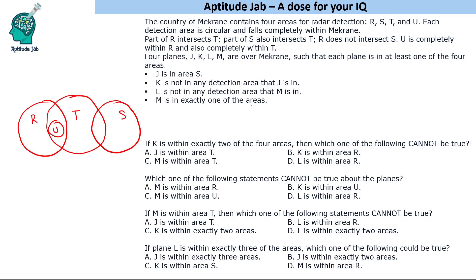M is in exactly one of the areas, so M has to be in only one area — it can be R, T, or S, but it cannot be U. Those are the conditions to keep in mind.